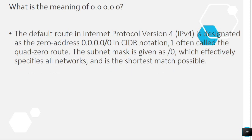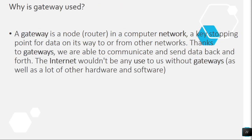Question 19: What is the meaning of 0.0.0.0? The default route in Internet Protocol version 4 (IPv4) is designated as the zero address 0.0.0.0 — in CIDR notation, often called the quad-zero route. The subnet mask is given as /0, which effectively specifies all networks and is the shortest match possible.